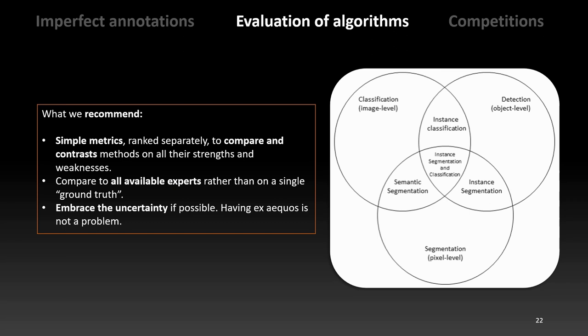So this is what we recommend based on our analysis of evaluation metrics. Use simple, independent metrics. Don't try to combine them into something that becomes impossible to interpret. If multiple experts are available, and ideally they should be, compare algorithms to all of them rather than trying to find a single ground truth, which probably doesn't exist anyway. And finally, there will be uncertainties on the value of the metric. So we shouldn't pretend that they are absolutely right. If two algorithms are within the uncertainty in the annotations, then we cannot say that one is better than the other. Having ex aequos may not be the most satisfying outcome, but it's better than discarding a method that is as promising as a superficial winner.